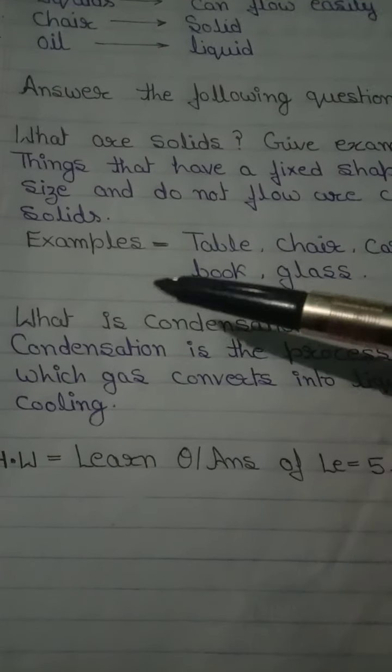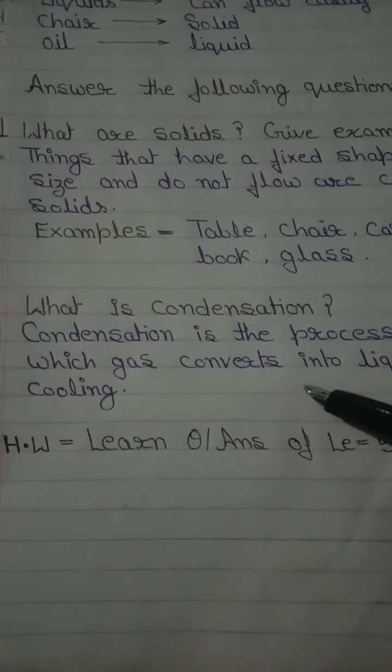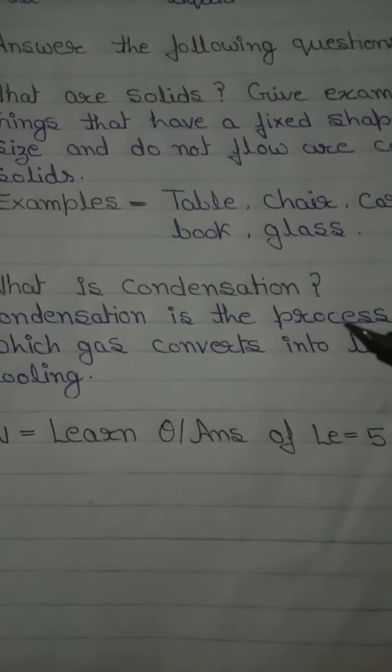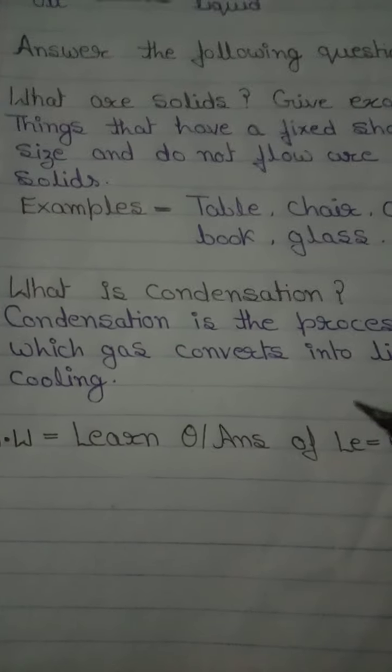You can see this diagram. You can see this container — it is covered with a plate. When you heat it, the water boils. When the heat is off, it cools down. When you take the plate, you have some drops of water on the inner side. Condensation is the process in which gas converts into liquids on cooling. How is the temperature? Cooled.